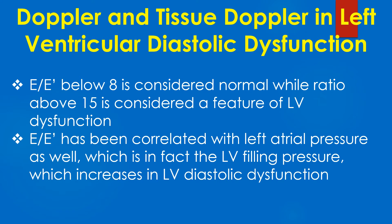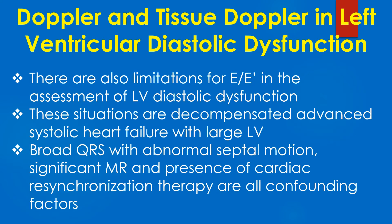E by E prime has been correlated with left atrial pressure, which is in fact the LV filling pressure that increases in LV diastolic dysfunction. There are also limitations for E by E prime in the assessment of LV diastolic dysfunction. These situations are: decompensated advanced systolic heart failure with large LV, broad QRS with abnormal septal motion, significant MR, and presence of cardiac resynchronisation therapy — all confounding factors.